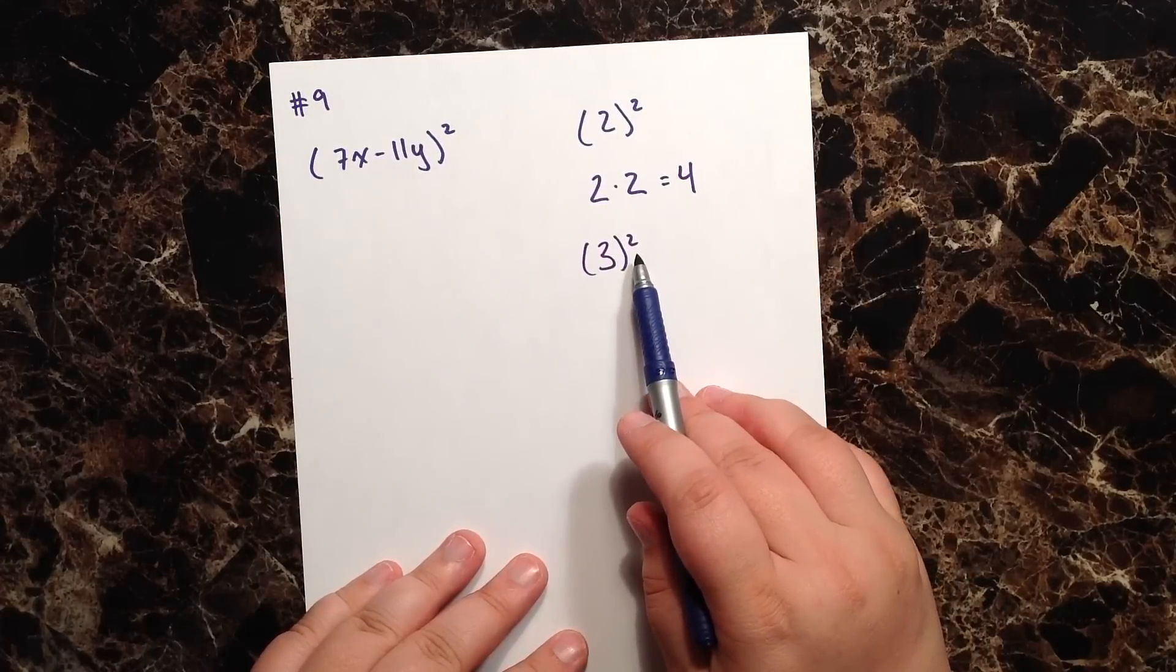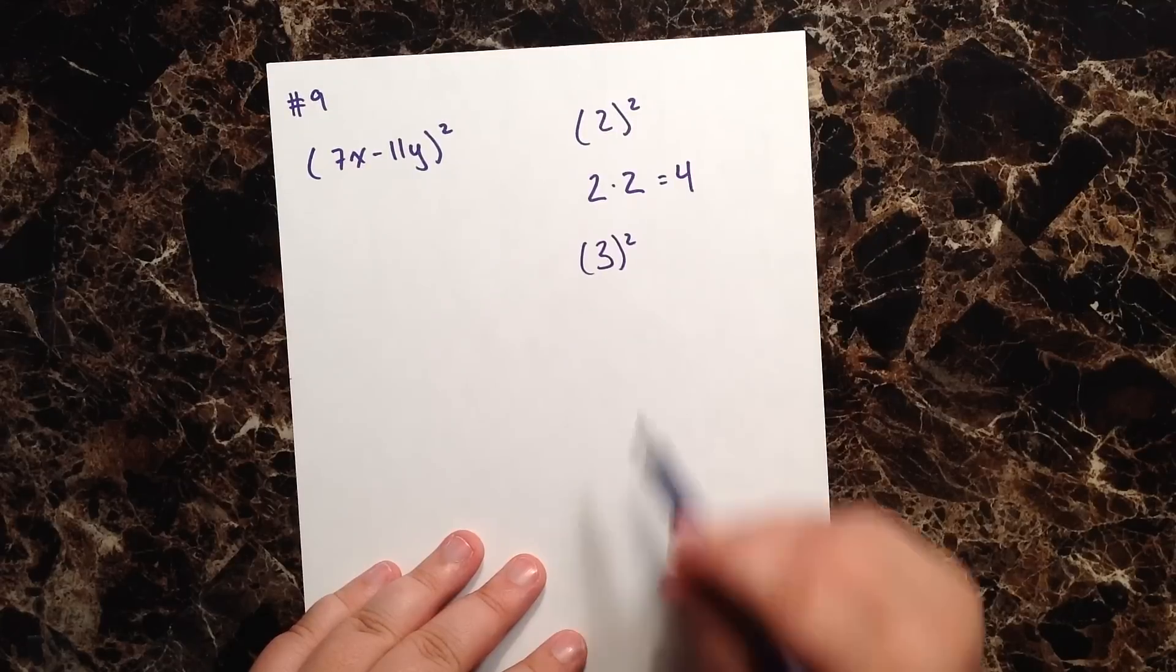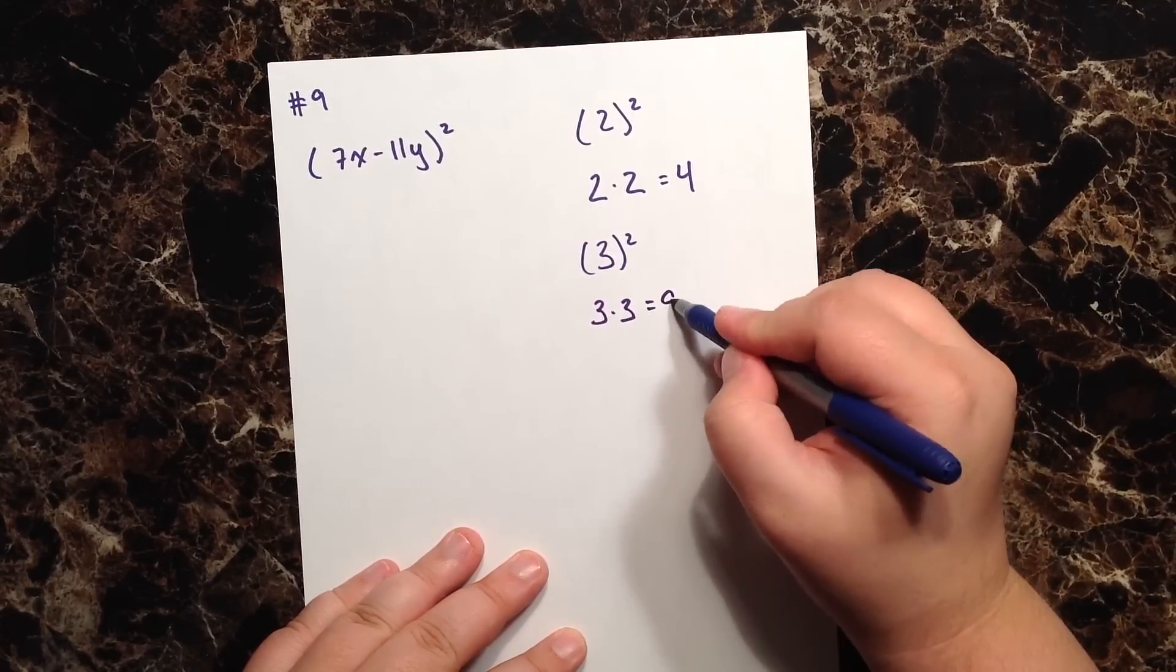And if I said what is 3², you'll tell me that the square indicates that we're multiplying this particular entity, which in this case is 3, by itself twice. So 3 times 3 equals 9.